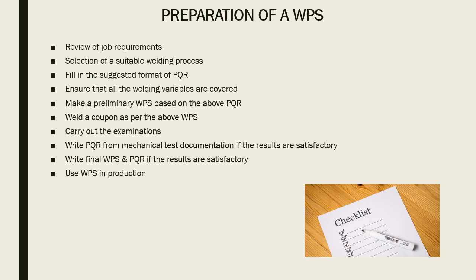Here's the general flow chart for preparing a WPS. First, review the job requirements: what code am I going to use, what are the customer requirements, what metals am I welding together, are there seismic or corrosion requirements? You need to look at that job and make sure you are addressing everything for that weld, those materials. Then select a suitable welding process — not every welding process is good for every material. You can't use oxy-acetylene welding to weld titanium or reactive metals.